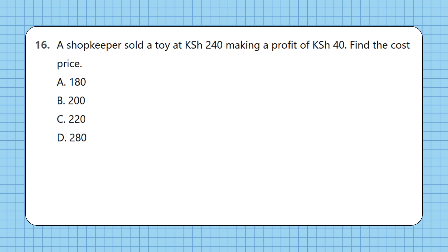16. A shopkeeper sold a toy at 240 Kenyan shillings making a profit of 40 Kenyan shillings. Find the cost price. A. 180, B. 200, C. 220, D. 280.